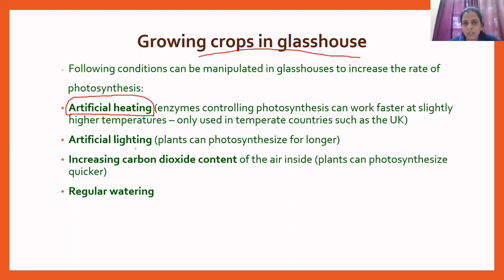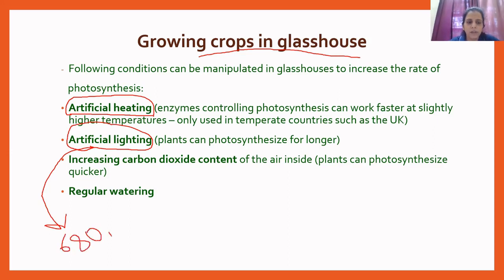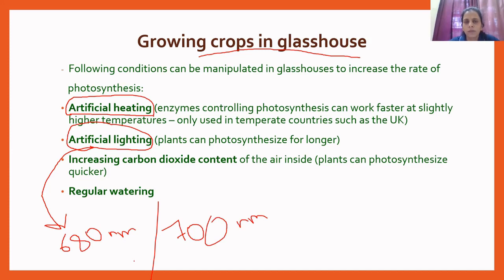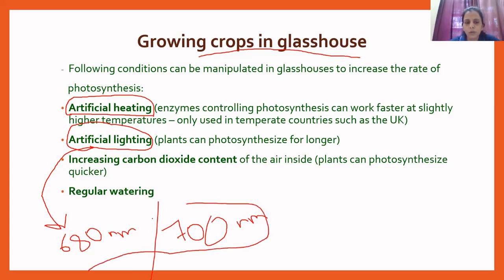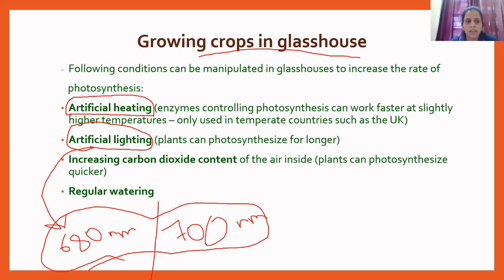Another very important factor which affects the rate of photosynthesis is light — the intensity of light available to the plant for photosynthesis. In glass houses, artificial lights are provided to the plant. Generally, plants absorb light of 680 nanometer wavelength, and some plants absorb light of 700 nanometer wavelength. Farmers choose these two particular wavelengths of light and provide it to the plants, so plants receive the correct type of light required for photosynthesis.